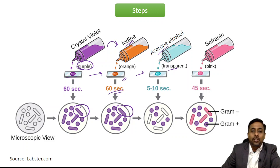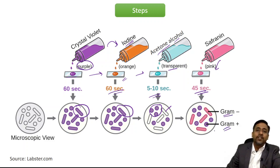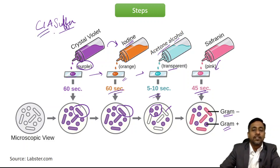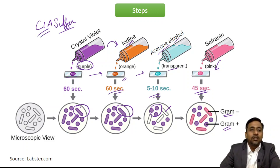After washing, acetone is added for around 5 to 10 seconds — it decolorizes the gram-negative organisms while gram-positive organisms remain purple. Then safranin is added for 45 seconds — gram-negative organisms take up the pink color while gram-positive organisms remain purple. You can remember the sequence as C-I-A-S: Crystal violet, Iodine, Acetone/Alcohol, Safranin.